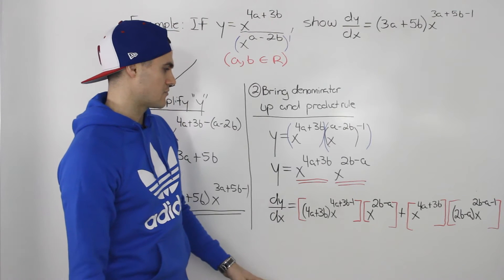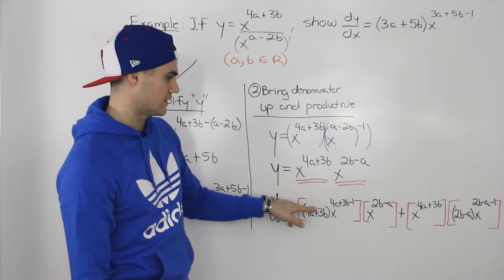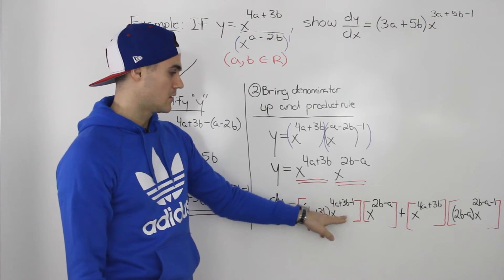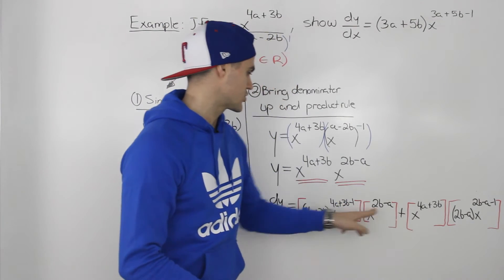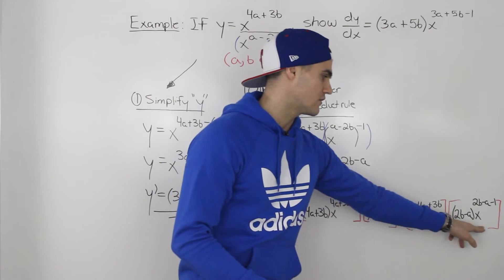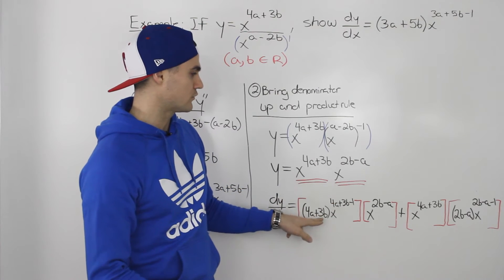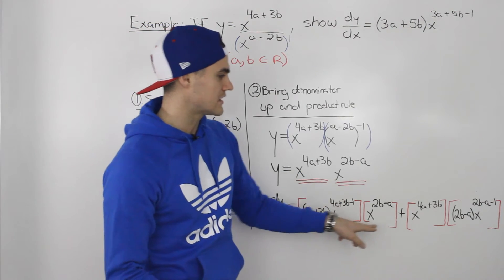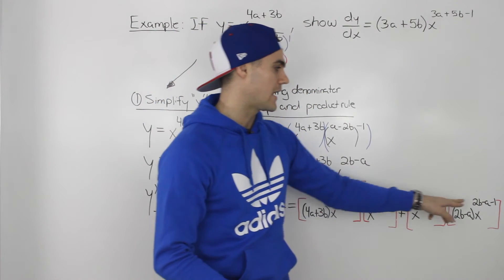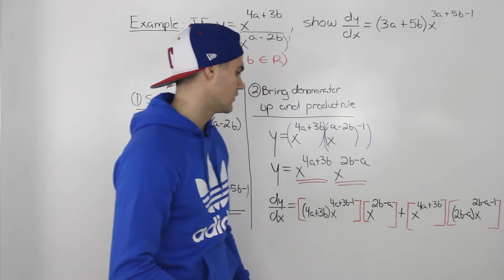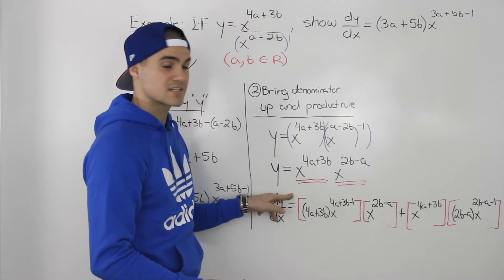Applying the product rule: we take the derivative of the first function — bring the exponent down and subtract 1 — multiplied by the second function left as is, plus the first function left as is, times the derivative of the second function. For the derivative of the second function, we apply the power rule: bring the exponent 2b minus a down in brackets, then x to the power of that same exponent minus 1. So this is the derivative of this function. Now let's simplify.